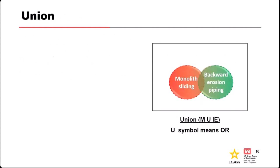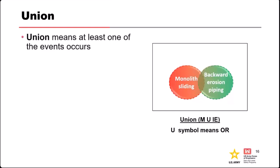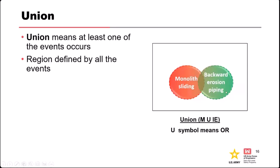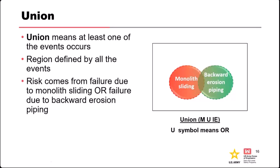Union is another common thing we use in risk analysis. Union means 'or' — the symbol looks a lot like a U, for union. What union means is that at least one of the events occurs. The union is defined by the region that covers all the events, including any overlapping area between them. In risk analysis, this is commonly how we arrive at a total risk estimate for a dam or levee, because the risk comes from failure due to multiple failure modes. Union is generally how we combine individual failure modes to get an estimate of the total probability of failure.